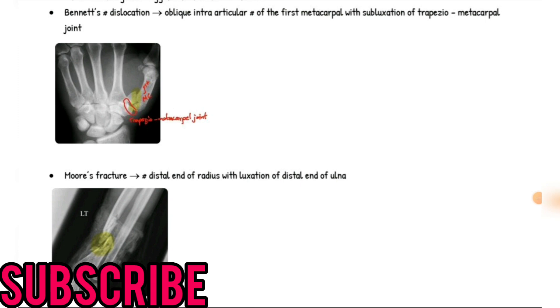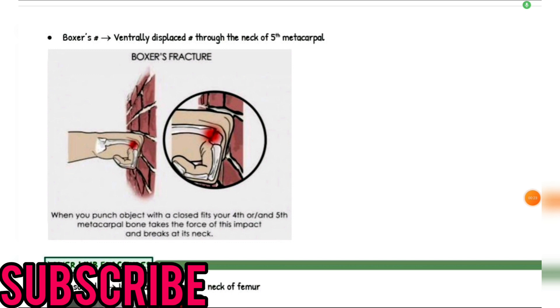Next is the Hume's fracture: high Monteggia fracture in smaller children. Next is the Bennett's fracture-dislocation: oblique intra-articular fracture of the first metacarpal with subluxation of the trapezio-metacarpal joint. Next is the Moore's fracture: fracture of the distal end of the radius with dislocation of the distal end of the ulna. Rolando's fracture: comminuted Bennett's fracture, comminuted intra-articular fracture of the first metacarpal. Boxer's fracture: ventrally displaced fracture through the neck of the fifth metacarpal — occurs when you punch an object with a closed fist.